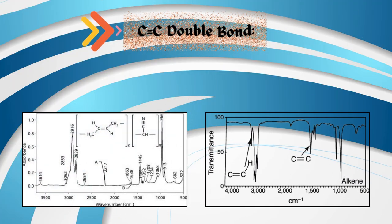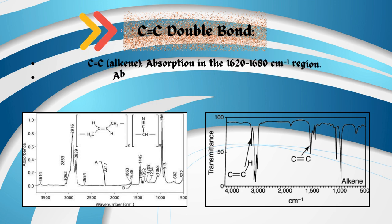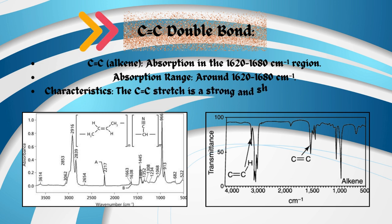Carbon-carbon CC double bond. Carbon-carbon in alkene: absorption in the 1,620 to 1,680 per centimeter region. Absorption range: around 1,620 to 1,680 per centimeter. Characteristics: the carbon-carbon stretch is a strong and sharp absorption in this range.